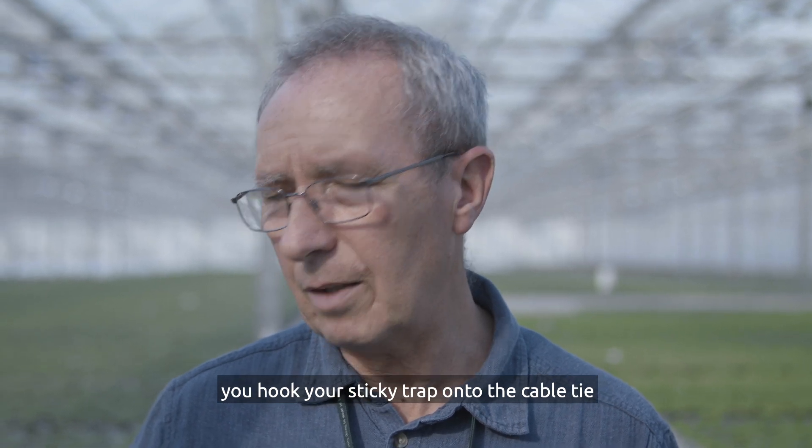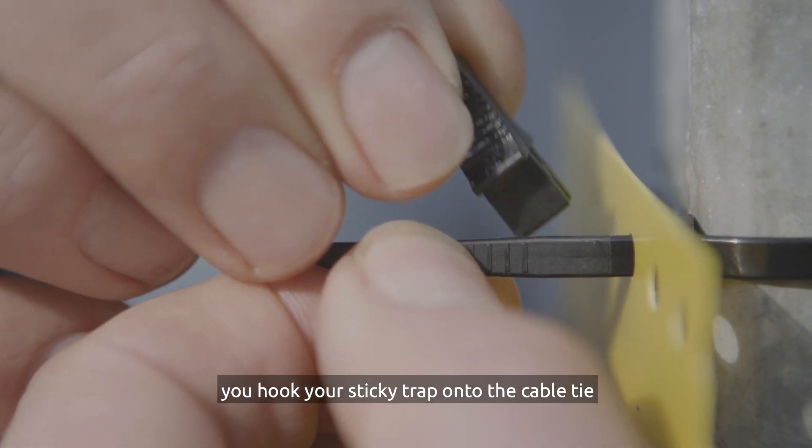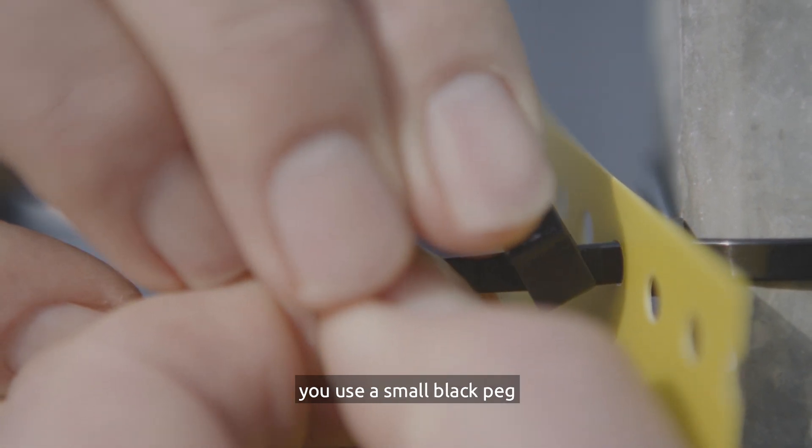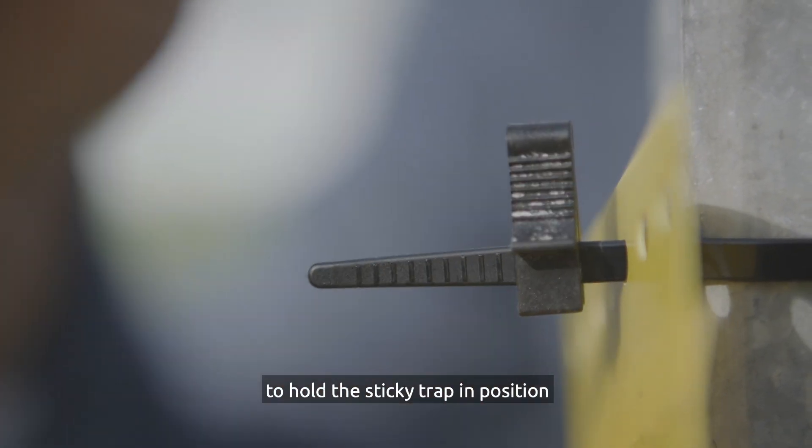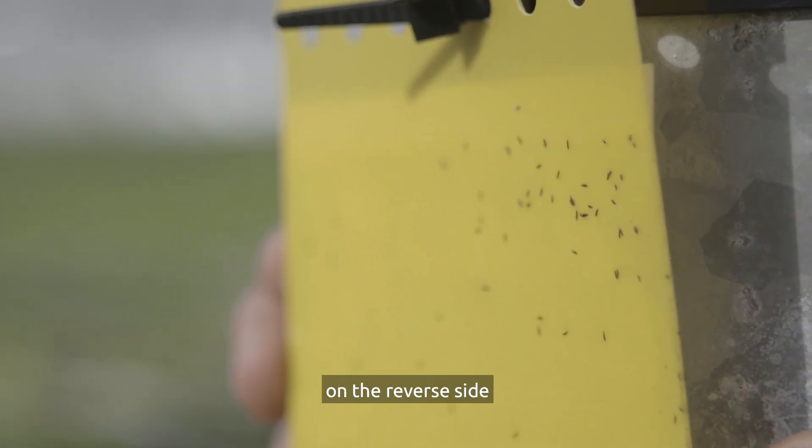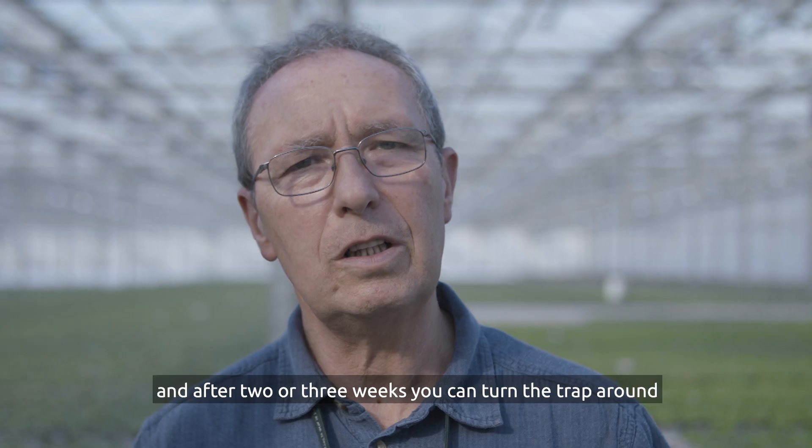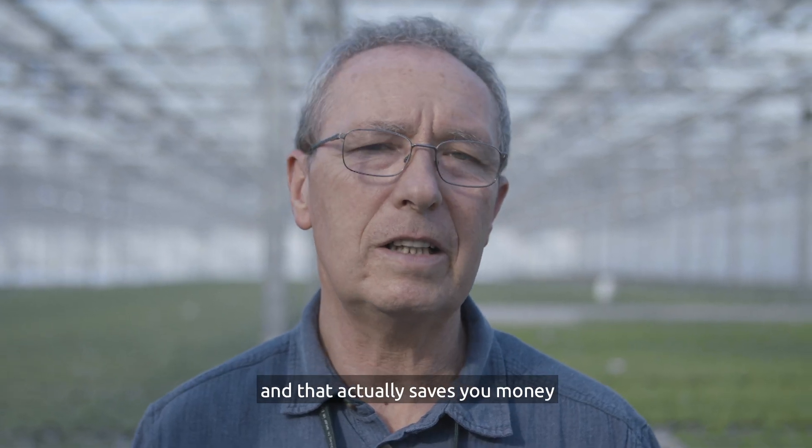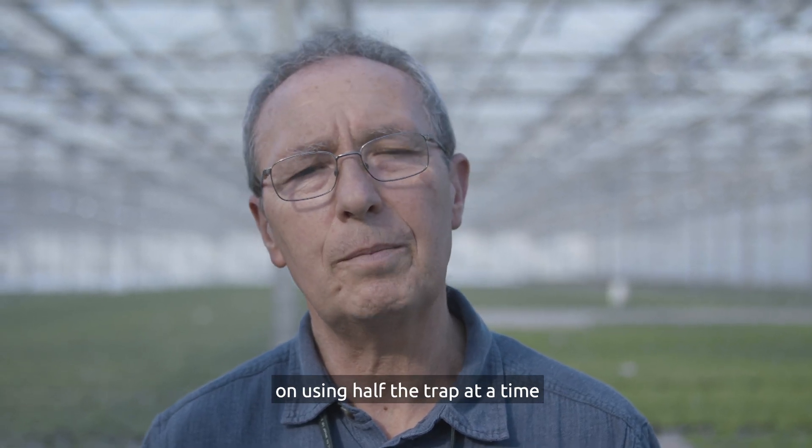You hook your sticky trap onto the cable tie, use a small black peg to hold it in position, and by doing that you keep the paper on the reverse side. After two or three weeks you can turn the trap around, which saves you money by using half the trap at a time.